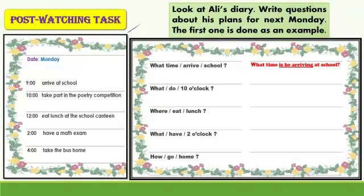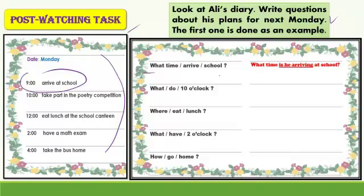Excellent job. This is our post-watching task. Look at Ali's diary and write questions about his plans for next Monday, using the present continuous for future arrangements. The first one is done as an example: 'What time is he arriving at school?' The answer is: 'He's arriving at school at nine o'clock.' Pay attention to the question forms and your use of the present continuous. Thank you for watching and good luck.